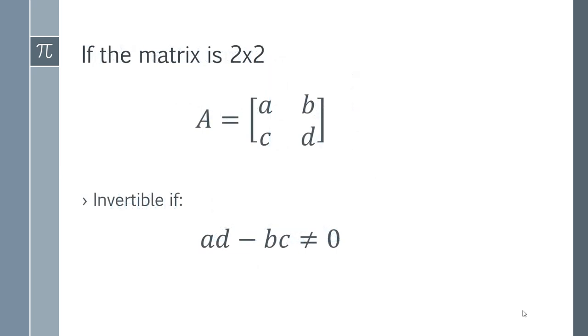In the case of a 2x2, if you were given a 2x2 example, so you've got a matrix in the form ABCD, you simply take AD and multiply those together and then subtract BC. And if that is not equal to zero, then you have an invertible matrix.